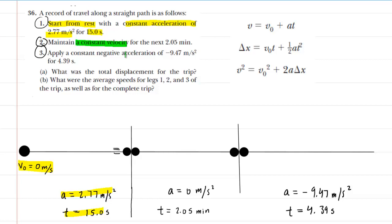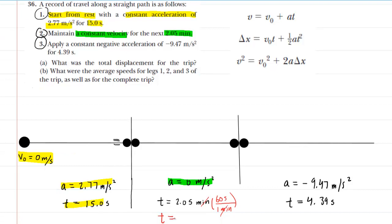In the second segment, the object is moving with a constant velocity, which means the acceleration is 0 meters per second squared. The time interval is given as 2.05 minutes, so we convert that to seconds: 2.05 times 60 equals 123 seconds.